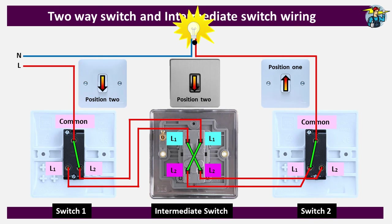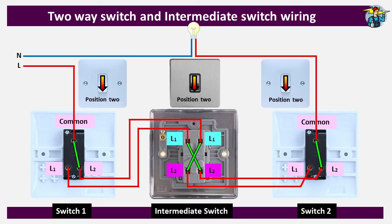If the person walks to the end of the corridor and needs to switch off the light before leaving, they simply change the present position of switch three to position two, which breaks the circuit and switches the light off. Likewise, you can introduce more intermediate switches to the circuit, always keeping two two-way switches at the start and end positions.